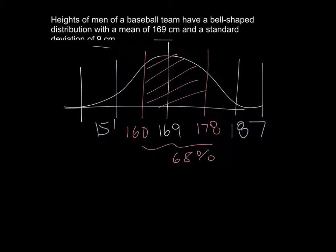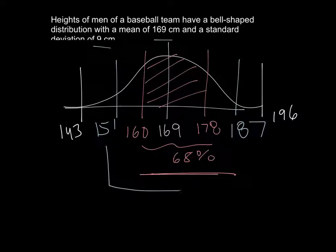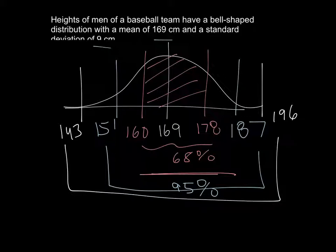And 169 minus 3 times 9, and that gives me 142. So my empirical rule said this was 68%, my two standard deviations is 95% of my data, and my three standard deviations are 99.7% of my data.